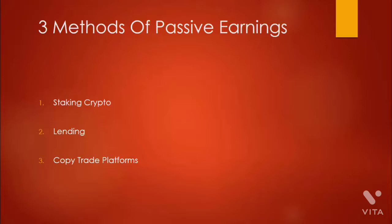Then we have the copy trade platforms method. There are a lot of platforms which allow you to copy different traders. These are trading platforms where people trade cryptocurrency and some people there are professional traders who do this as a normal job. You can see their results and copy them. So these are the three methods we are going to talk about that allow you to generate passive income from cryptocurrency.